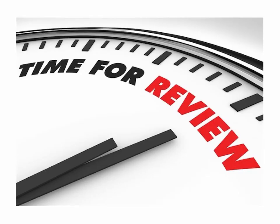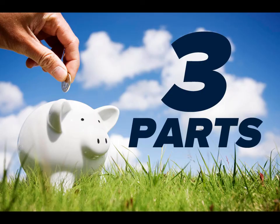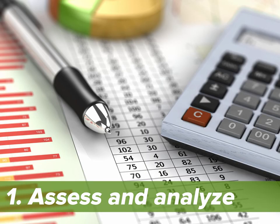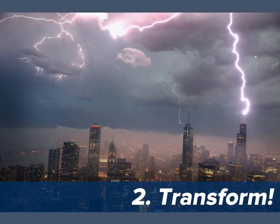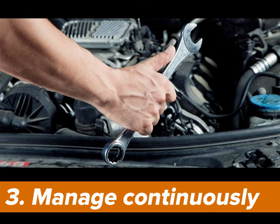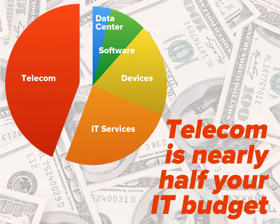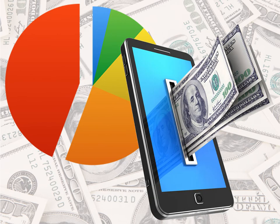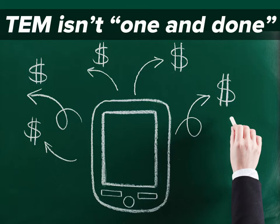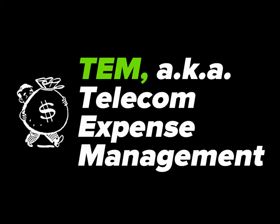Class is almost dismissed — let's do a quick review. TEM, aka Telecom Expense Management, is made up of three key parts: 1. Assessment and Analysis — gathering info from primary sources and looking for savings opportunities. 2. Transforming — taking that assessment and analysis and making cost-saving changes. 3. Ongoing management — making adjustments as things change. TEM is important to your business because telecom is the biggest slice of your IT budget, making it the first and best place to look for savings opportunities. And because things are constantly in motion, it can't be a one-and-done thing. And that's TEM in a nutshell.